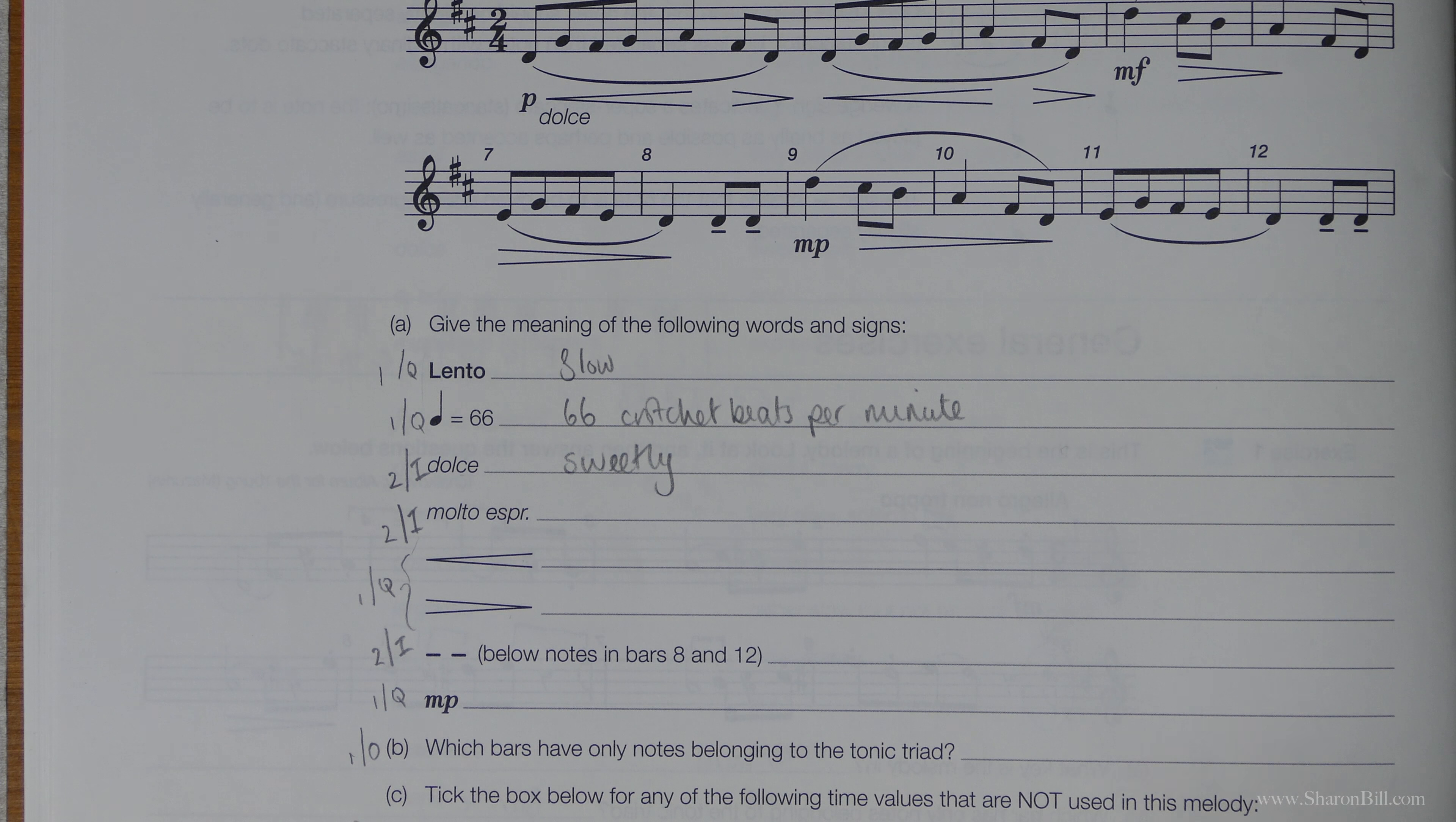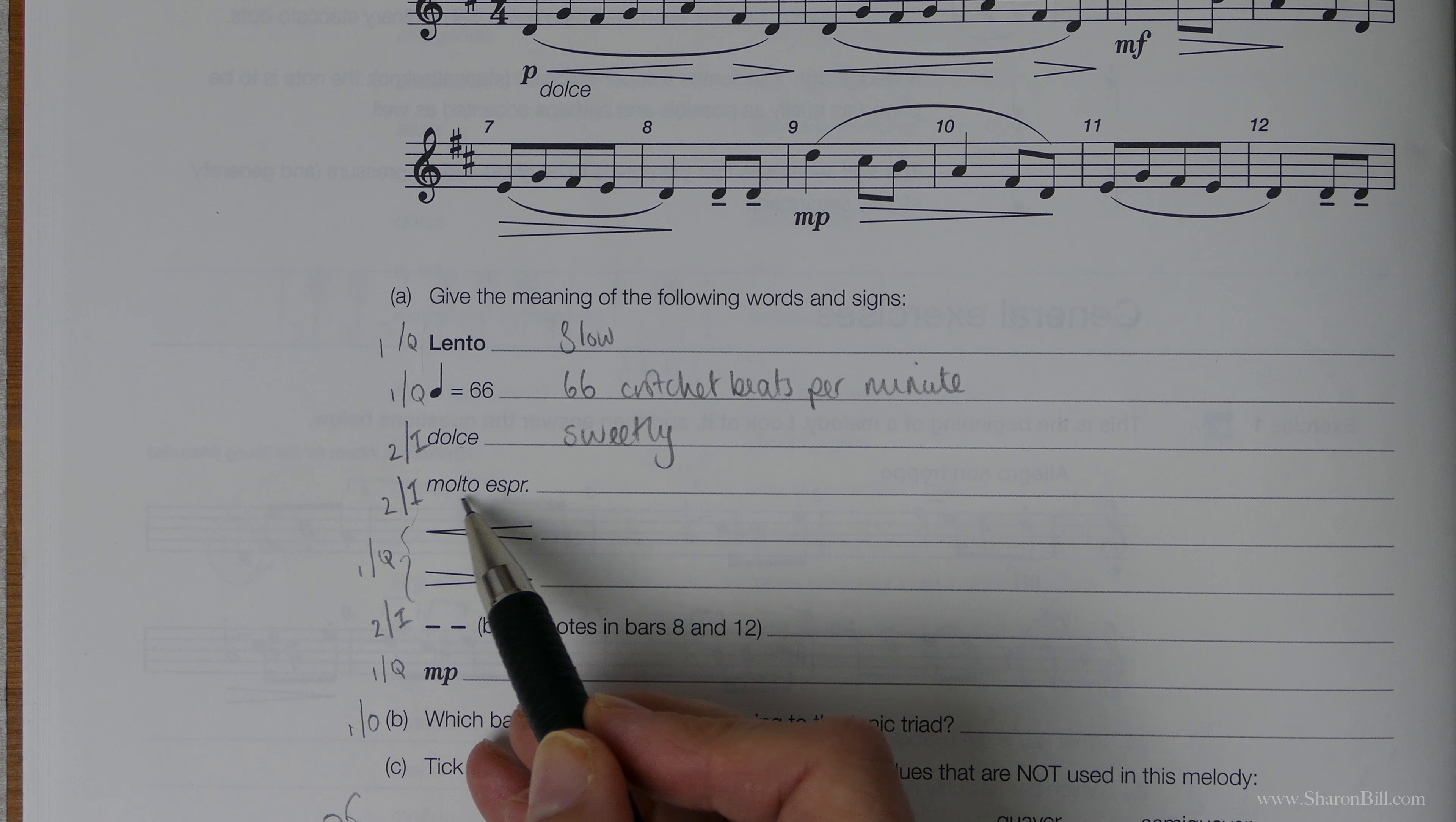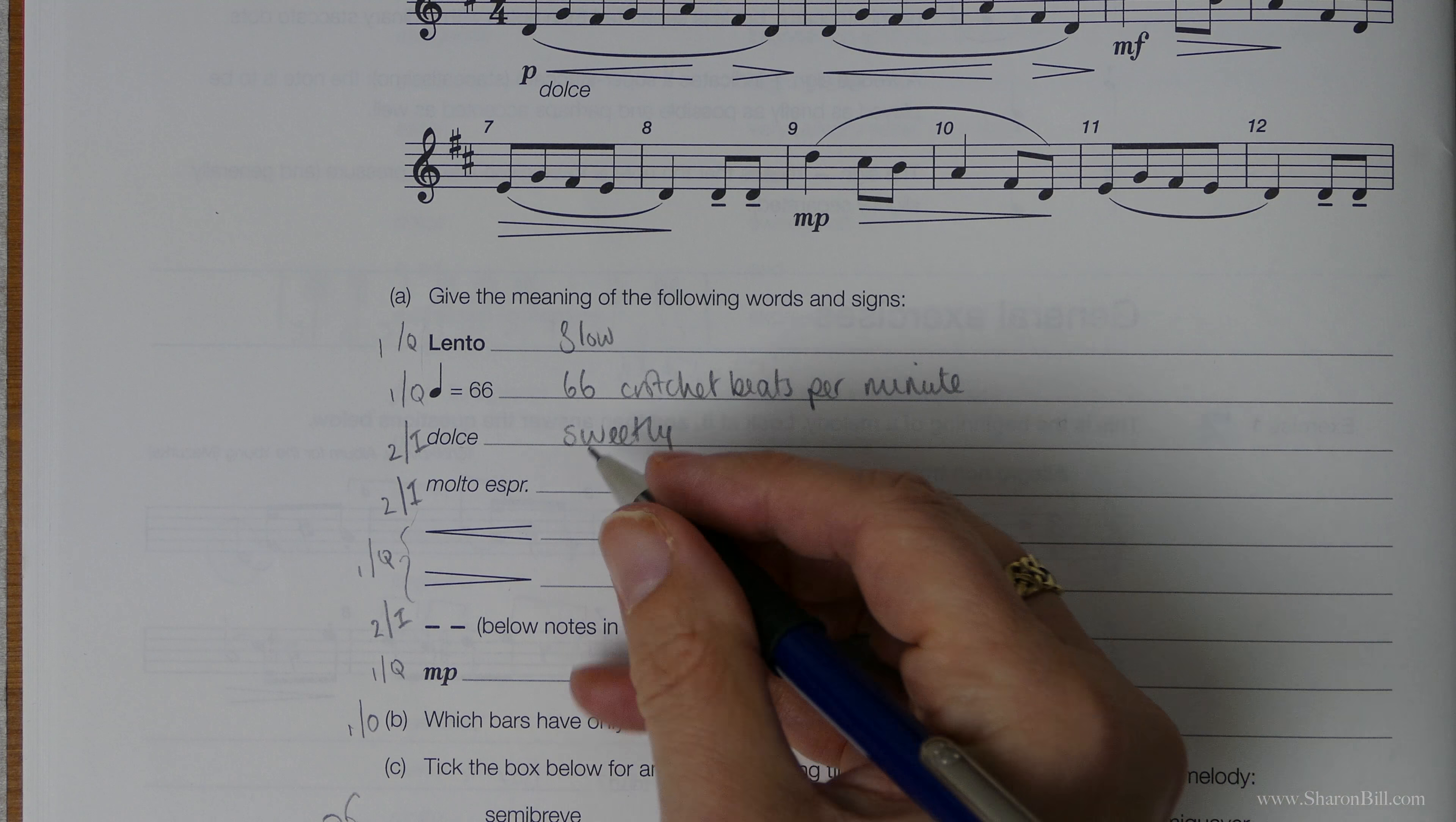Dolce means sweetly. I always remember that. I always think dolce looks a little bit like dolly. Find some bizarre way to try and help you to remember these things and dollies are very sweet. So just find some word associations to help you remember these different performance directions. This here, molto esp, is short for molto espressivo. Molto is much, with much espressivo expression, so with much expression or very expressively.